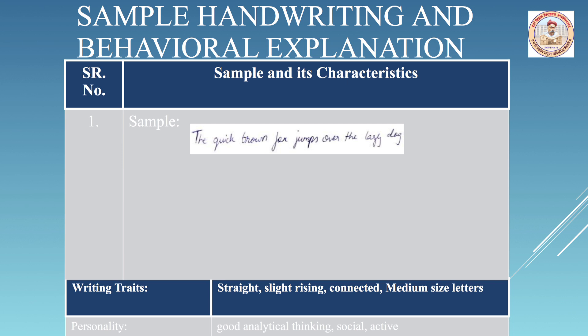The model works as follows: you take a sample image of handwriting, apply CNN, and as the output you get the classified pattern, which determines the nature and behavior of the person.